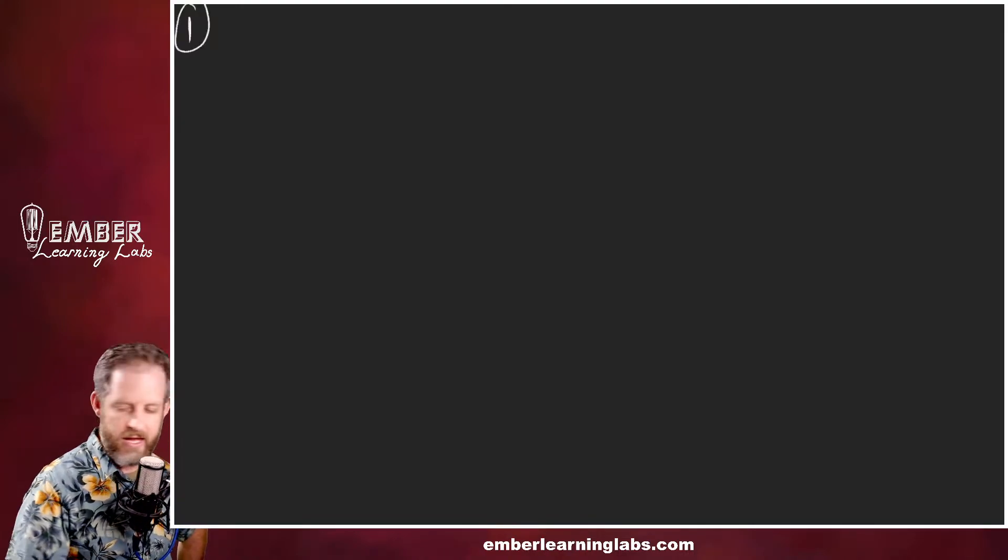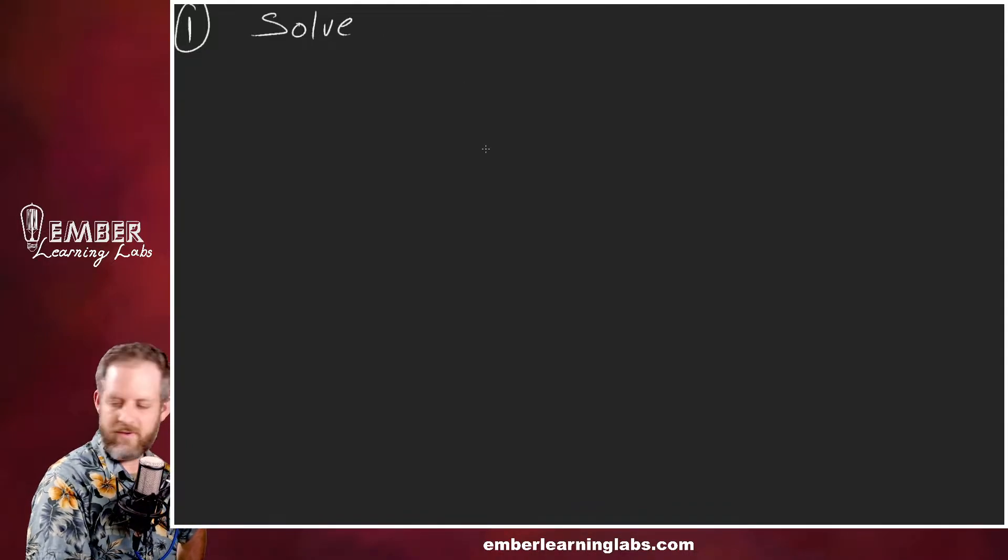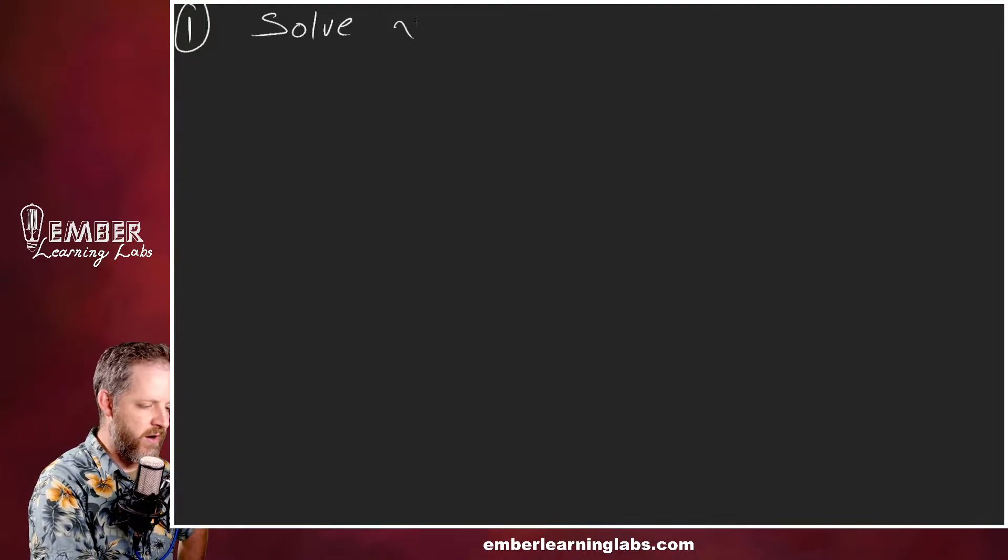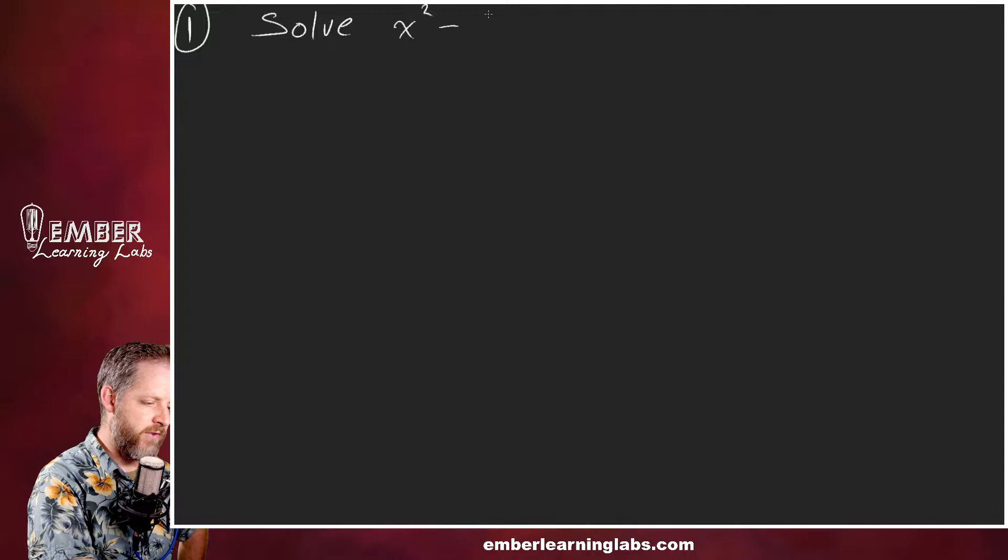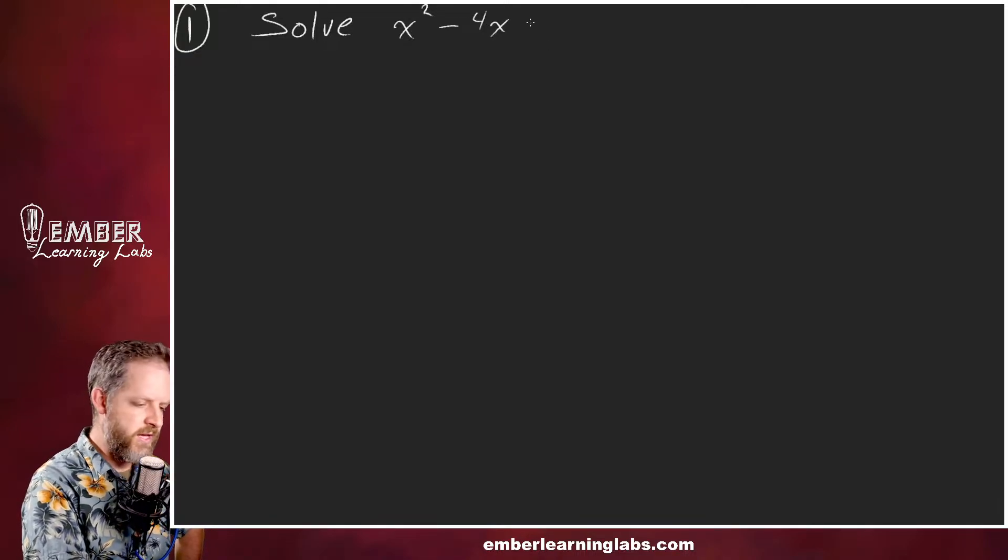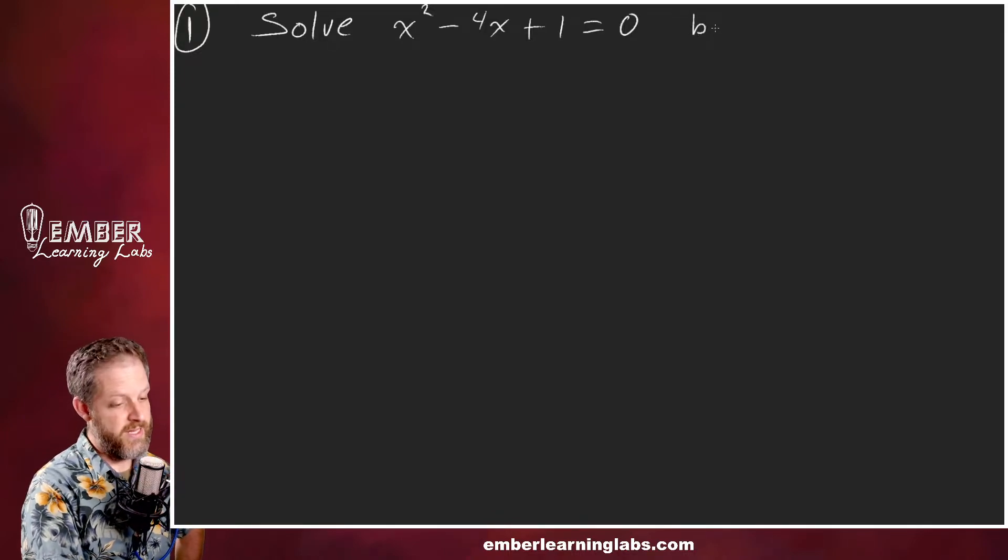Example number one and only. We're going to solve x squared minus 4x plus one equals zero by completing the square.